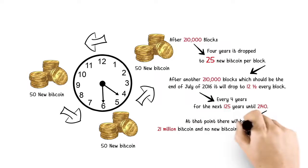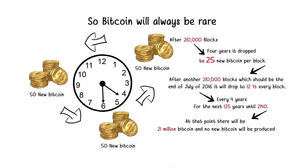At that point, there will be 21 million Bitcoin and no new Bitcoin will be produced from that point on. So, Bitcoin will always be rare.